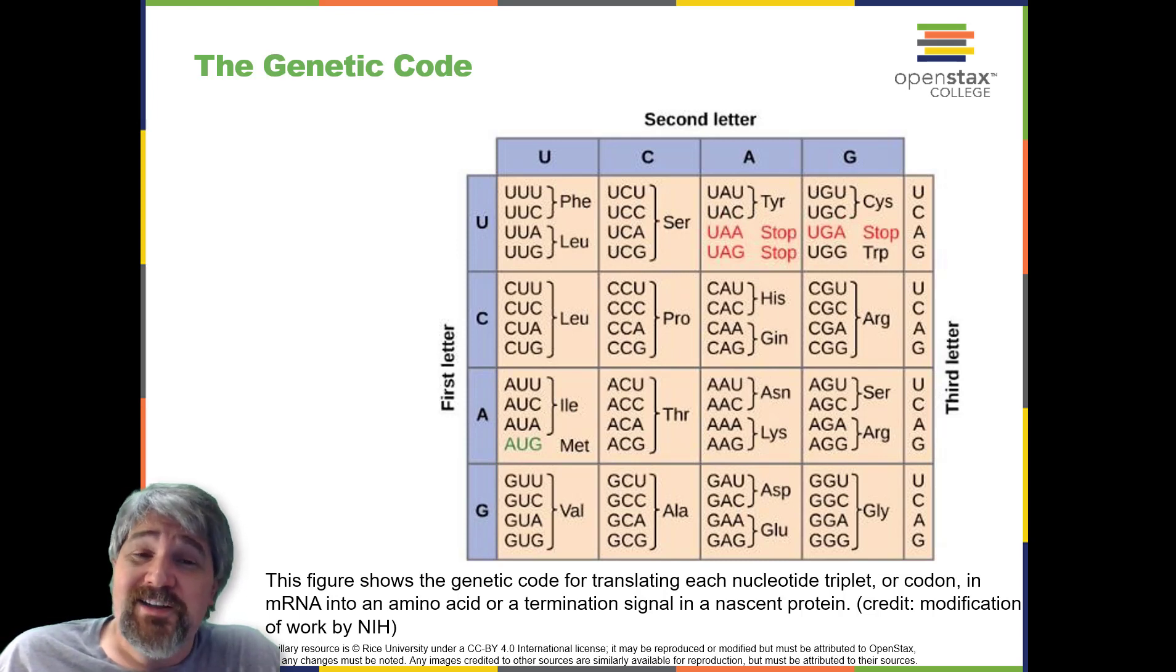Using a three-nucleotide code means that there are a total of 64, so 4 times 4 times 4, as each codon consists of three letters, and those three letters can be made up of one of four nucleotides.